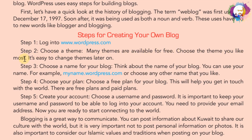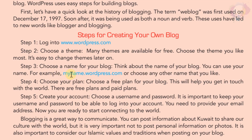Choose the theme you like most. It's easy to change themes later on. Step 3: Choose a name for your blog. Think about the name of your blog — you can use your name. For example, minami.wordpress.com, or choose any other name that you like.